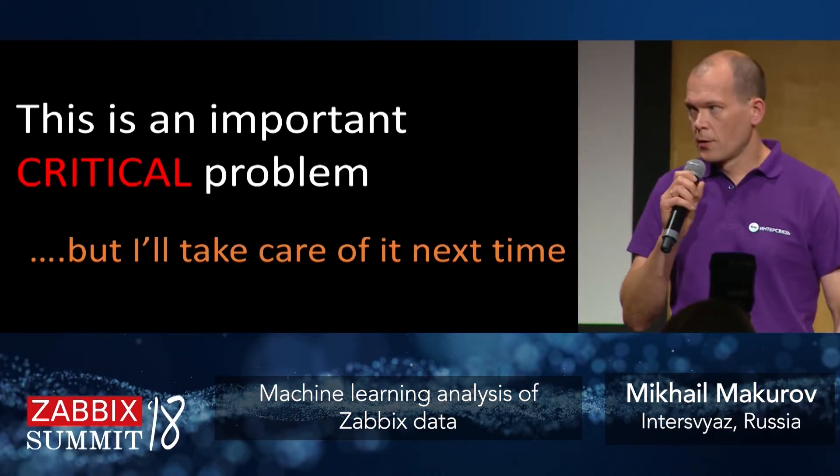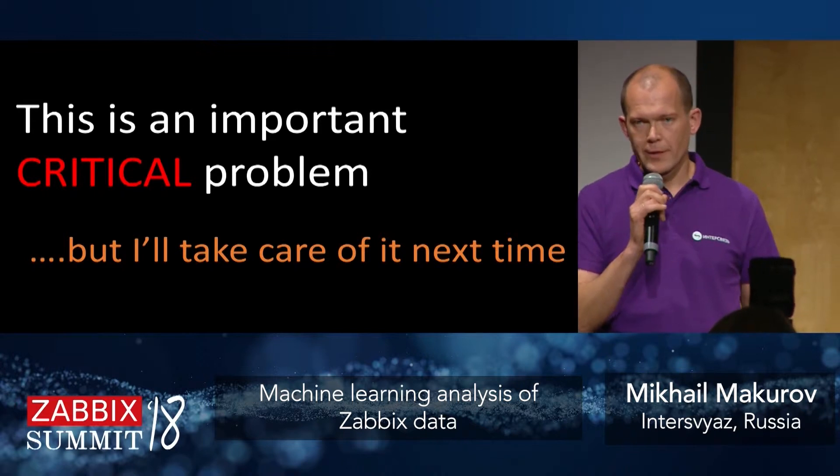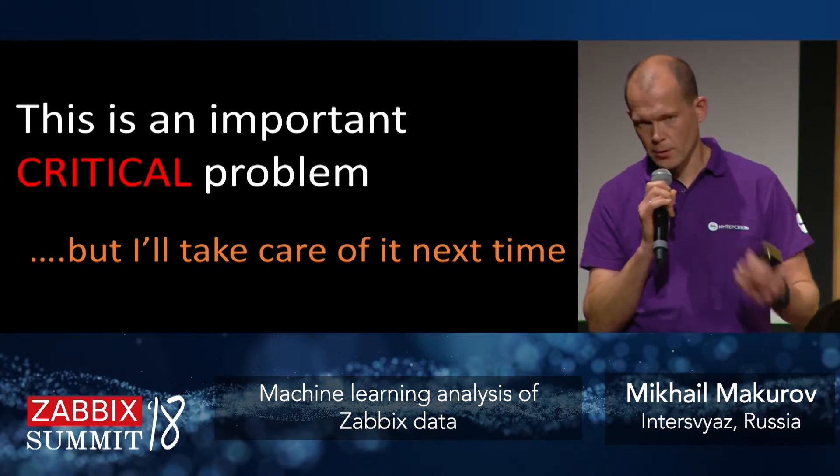So we used machine learning this way: we took our data about all the incidents — or problems, in Zabbix terminology — and fed it to a machine learning model. It started to predict whether a newly created problem would require real human attention, or whether it would be closed by bulk processing or automatic means by the monitoring team. We were able to prioritize problems based on that, and out of 700, they started getting the 30 most relevant ones and attending to real important problems first.